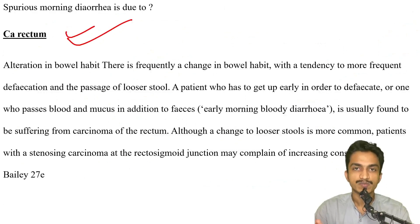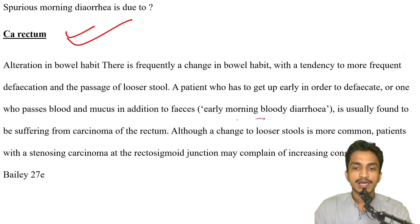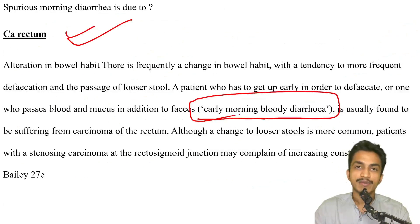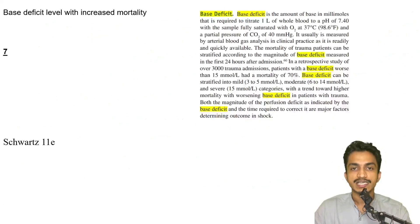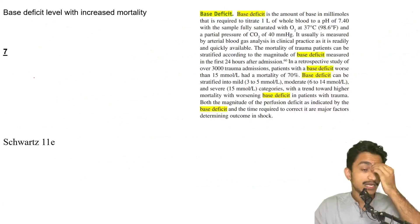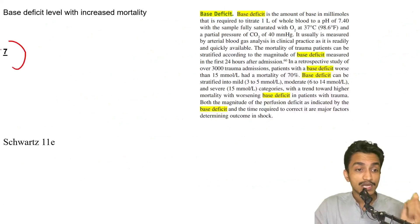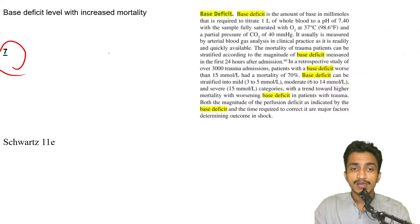Spurious morning diarrhea — straightforward from Bailey, studied since MBBS days. Spurious morning diarrhea is seen only in carcinoma rectum. A patient with early morning bloody diarrhea — the answer is CA rectum.